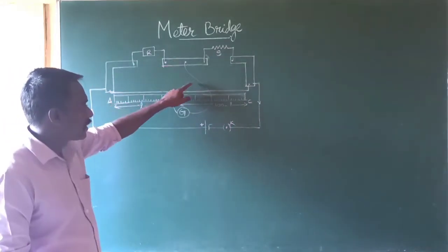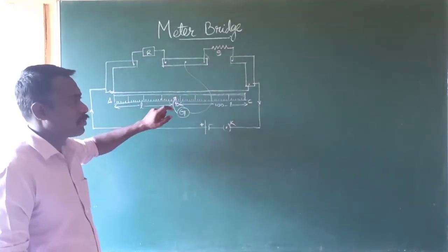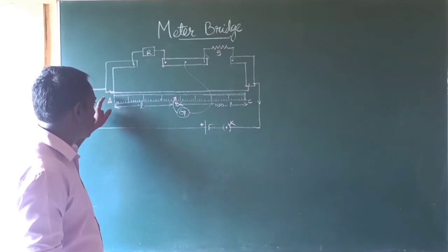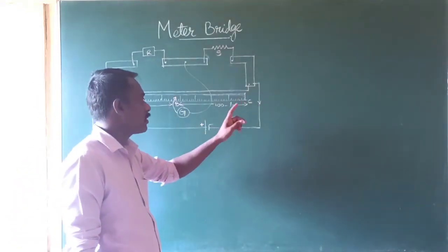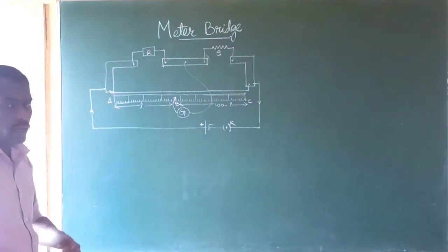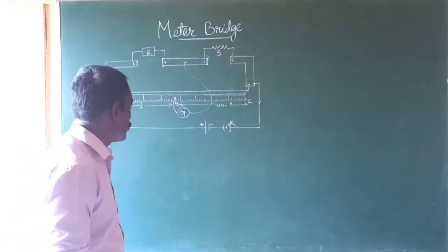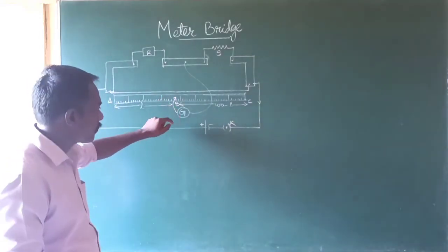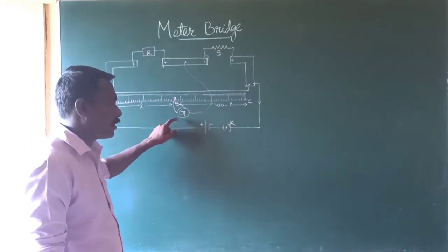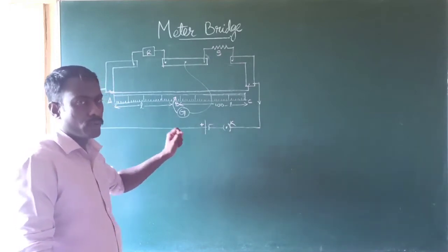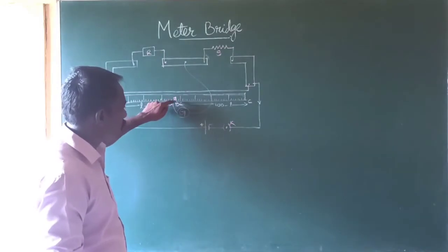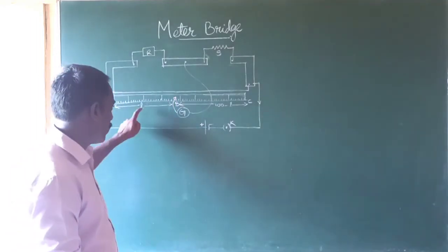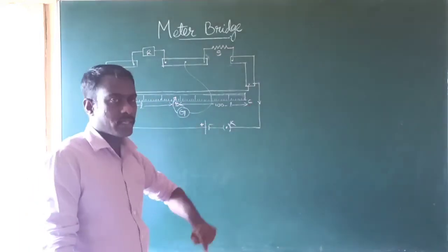A galvanometer is connected, and it is connected to a slider called a jockey. The battery's positive terminal is connected to point A and the negative terminal is connected to point C. When we slide this jockey along the alloy wire and reach a point where the galvanometer shows zero, that point is known as the null point, and it is marked as point B. The distance from A to B is the length L, and the distance from B to C is taken as 100 minus L.